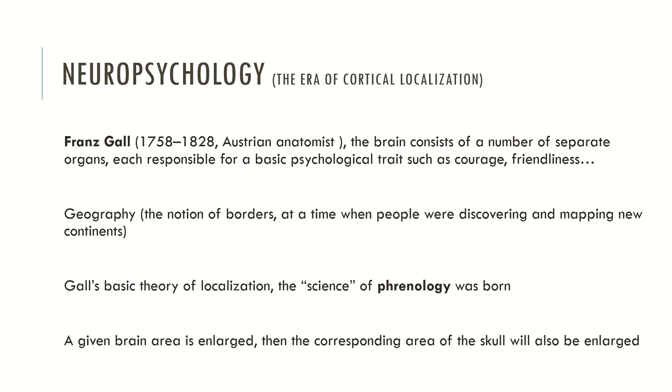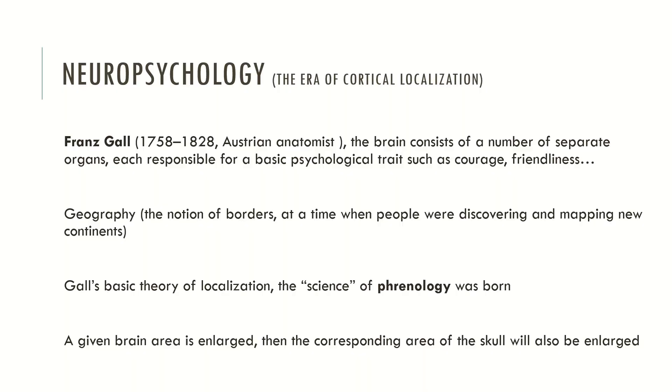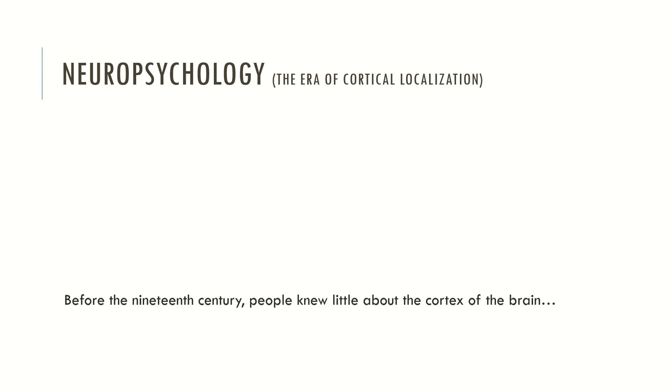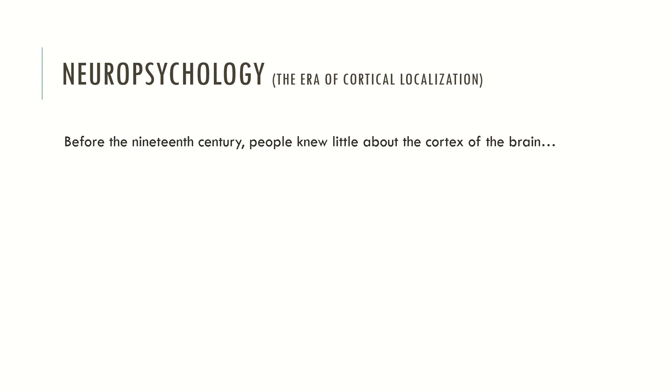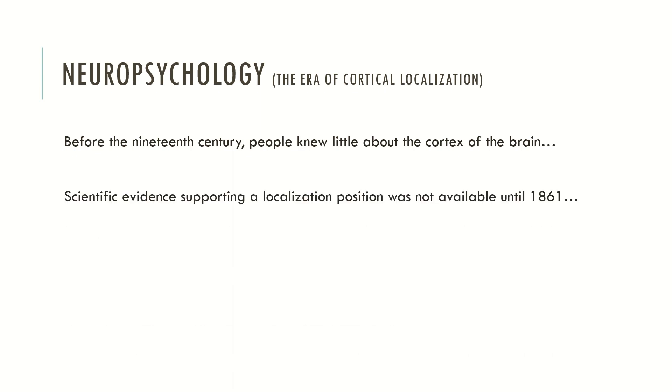In the beginning of the 19th century there were two major neuropsychologists very important to establishing the idea of language and localization: Broca and Wernicke. Before the 19th century, people knew little about the cortex and the brain, and scientific evidence supporting a localization of different functions in the brain was not available until 1861.